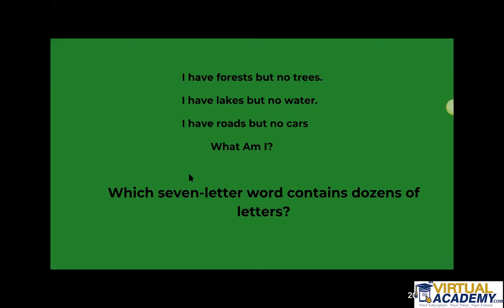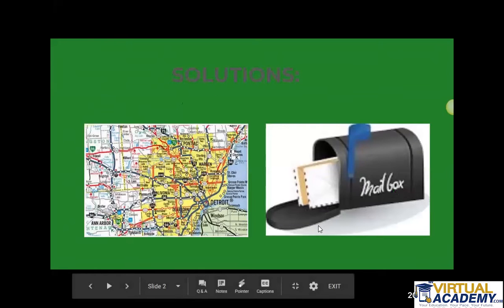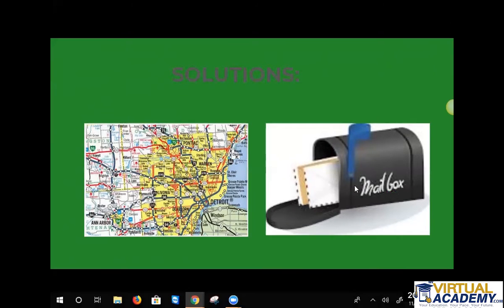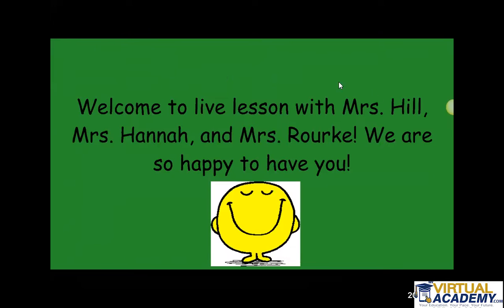Which seven-letter word contains dozens of letters? And don't Google the answers, don't be a cheater. Mailbox, a map. You were right — a map and a mailbox. Good job, you guys, they are so smart. I was like, the alphabet has eight letters. Good job.